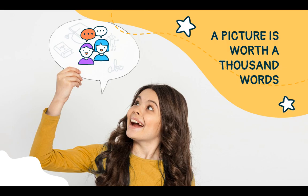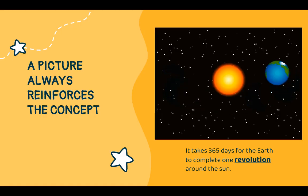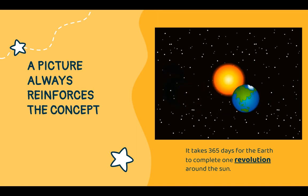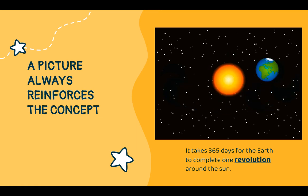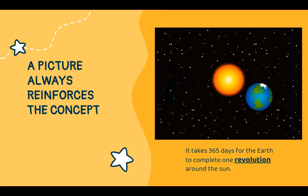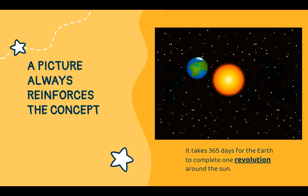A picture is worth a thousand words, so a picture always reinforces the concepts. One of the animations we have access to — I opened Google and searched Earth's revolution around the sun GIF. This came up on Giphy — it's a BrainPOP GIF created from a BrainPOP video. And I captioned it: it takes 365 days for the Earth to complete one revolution around the sun.